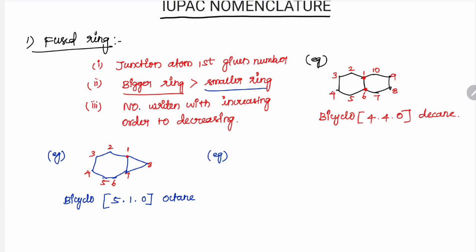Another example: 6-member ring with 4-member ring. Here, this is the junction atom — first condition. Give the number to the junction atom first: 1, 2, 3, 4, 5, 6, 7, 8. Second rule: number from Bigger Ring to Smaller Ring — number one starts at the bigger ring side. Third rule applies: Bicycle with the bracket values in decreasing order.